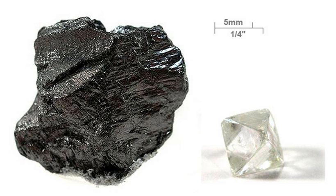Commercially viable natural deposits of graphite occur in many parts of the world, but the most important sources economically are in China, India, Brazil, and North Korea. Graphite deposits are of metamorphic origin, found in association with quartz, mica, and feldspars in schists, gneisses, and metamorphosed sandstones and limestone as lenses or veins. Deposits of graphite in Borrowdale, Cumberland, England were at first of sufficient size and purity that, until the 19th century, pencils were made simply by sawing blocks of natural graphite into strips before encasing them in wood. Today, smaller deposits of graphite are obtained by crushing the parent rock and floating the lighter graphite out on water. There are three types of natural graphite: amorphous, flake or crystalline flake, and vein or lump.